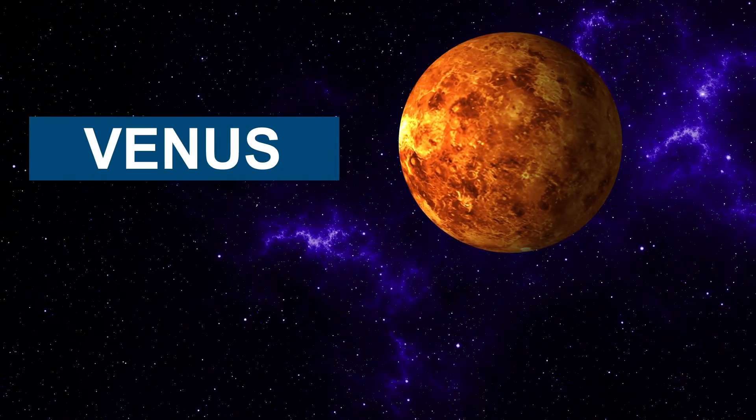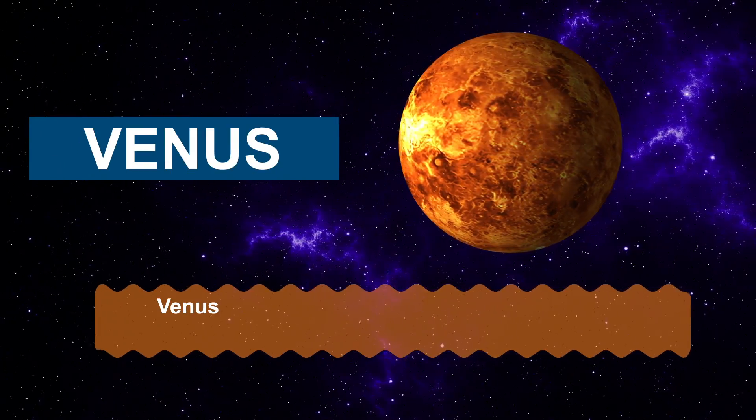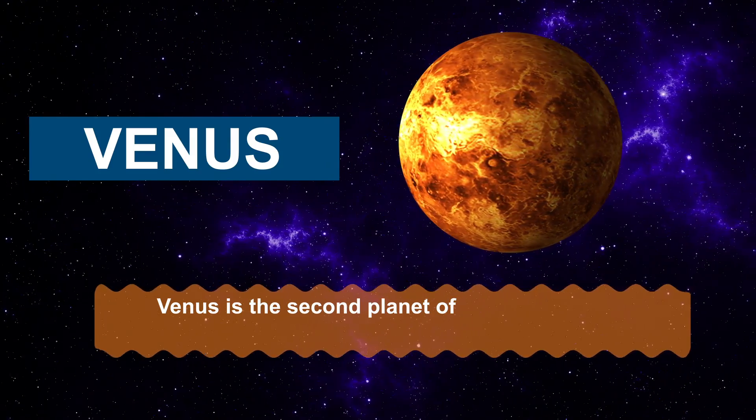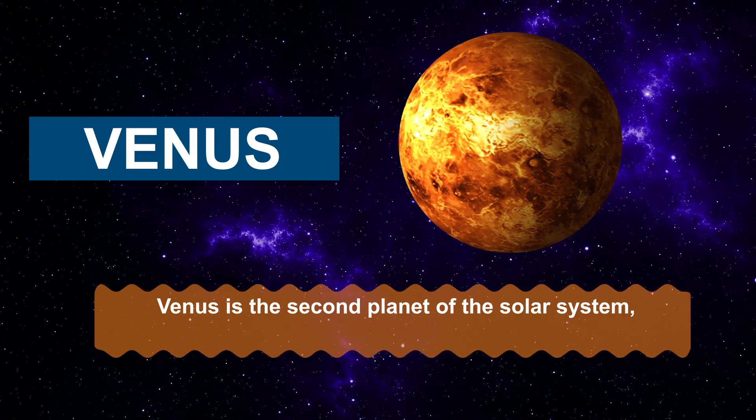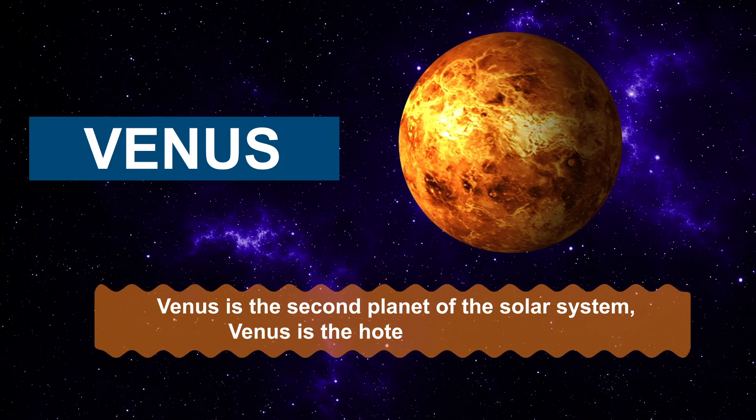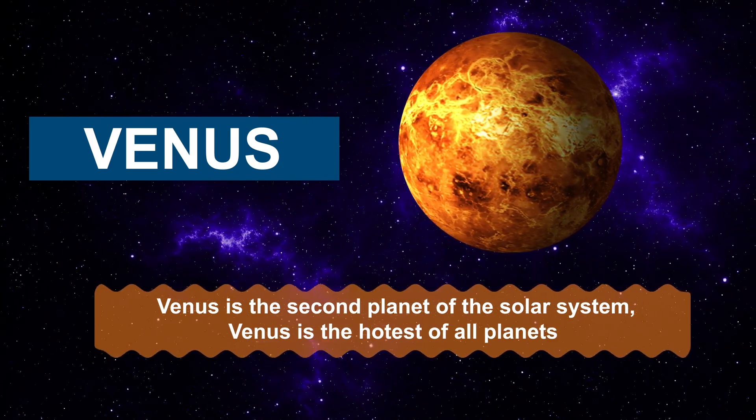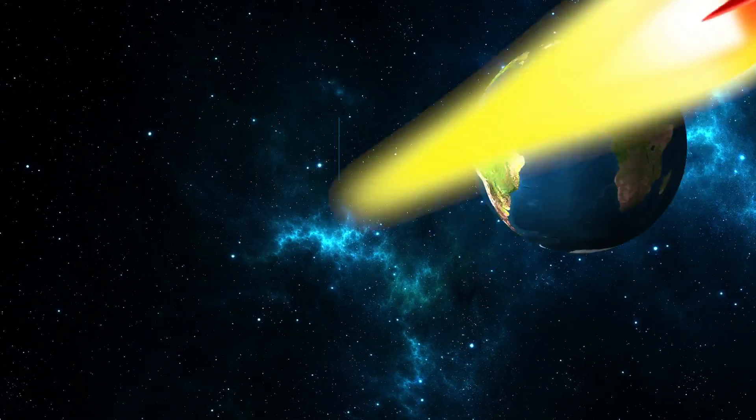Venus is the second planet of the Solar System. Venus is the hottest of all planets.